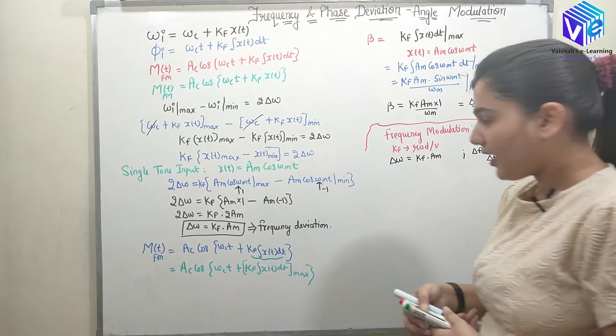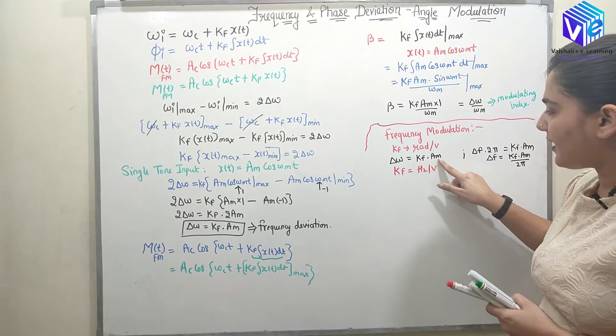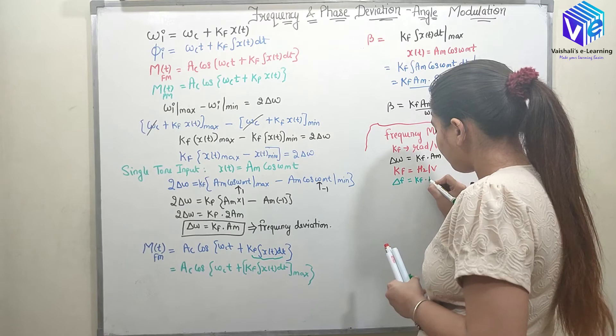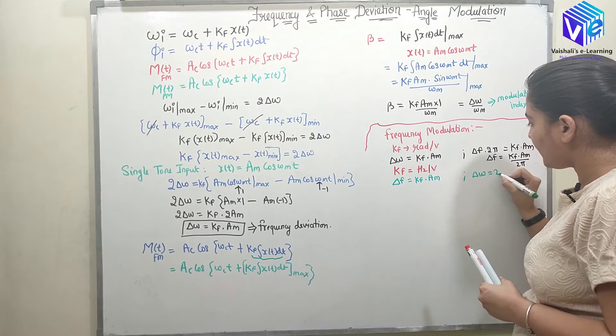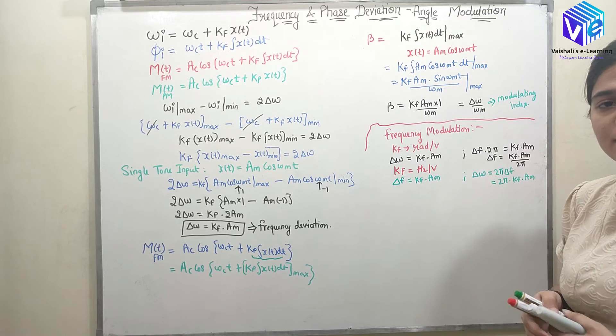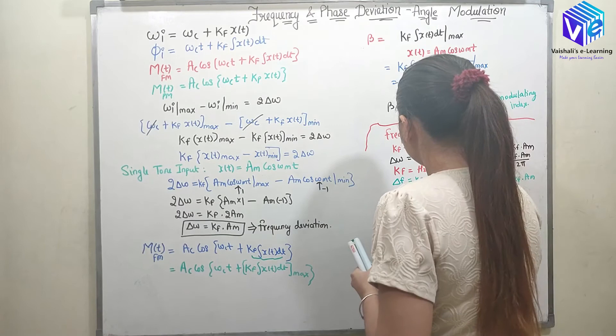If k_f has the unit hertz per volt and A_m is in volts, then dividing volt by volt leaves hertz, so delta_f = k_f * A_m. If I need delta_omega, then delta_omega = 2*pi * delta_f = 2*pi * k_f * A_m. That is how you find delta_omega and delta_f based on the unit of k_f. Now talking about phase deviation.